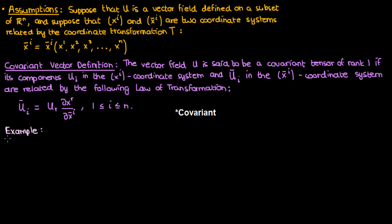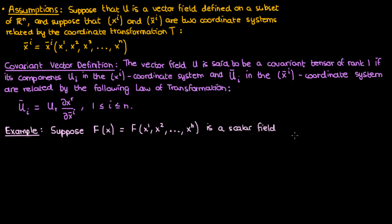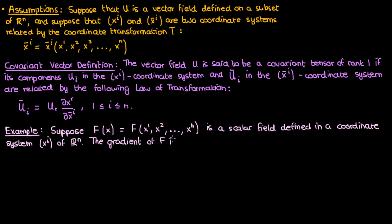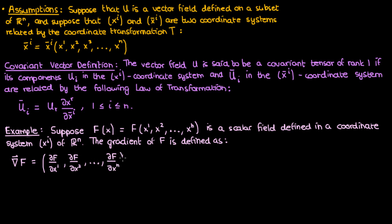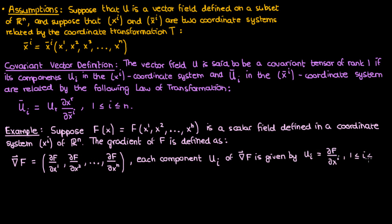Let's briefly go over an example of a covariant vector. Suppose I had a differentiable scalar field f. Basically, if you gave f a point in Rn, it would output a scalar — that's what I mean by scalar field. This scalar field is defined on the unbarred coordinate system xi in Rn. We can also define the gradient of the scalar field as the vector field del f, with each component of the vector field being a partial derivative of f with respect to each of the coordinates xi. In other words, each component u sub i of del f is given by the partial of f with respect to xi, where i is a free index from 1 to n.